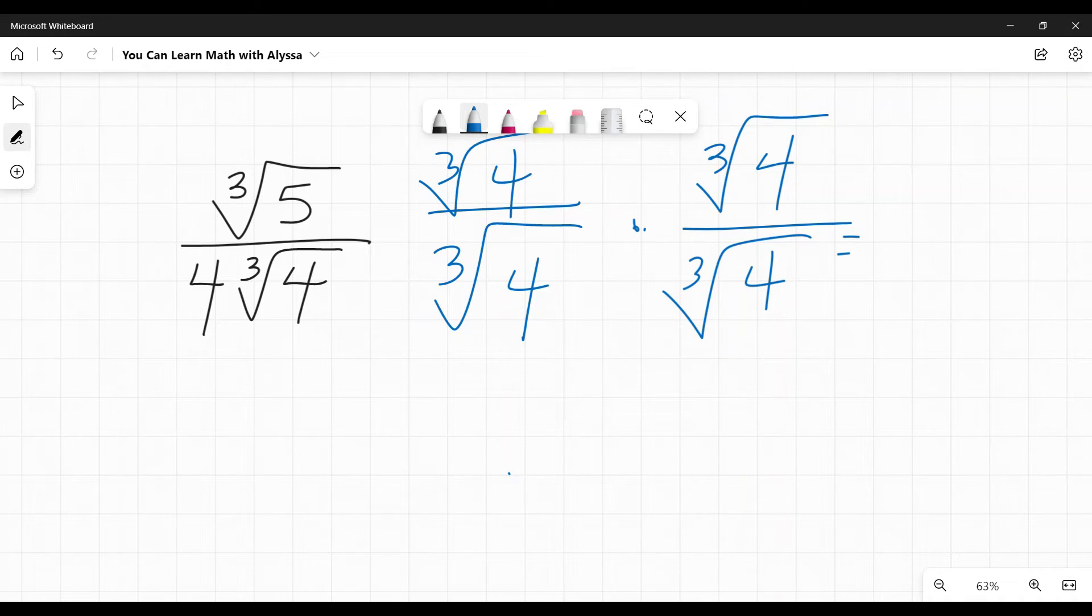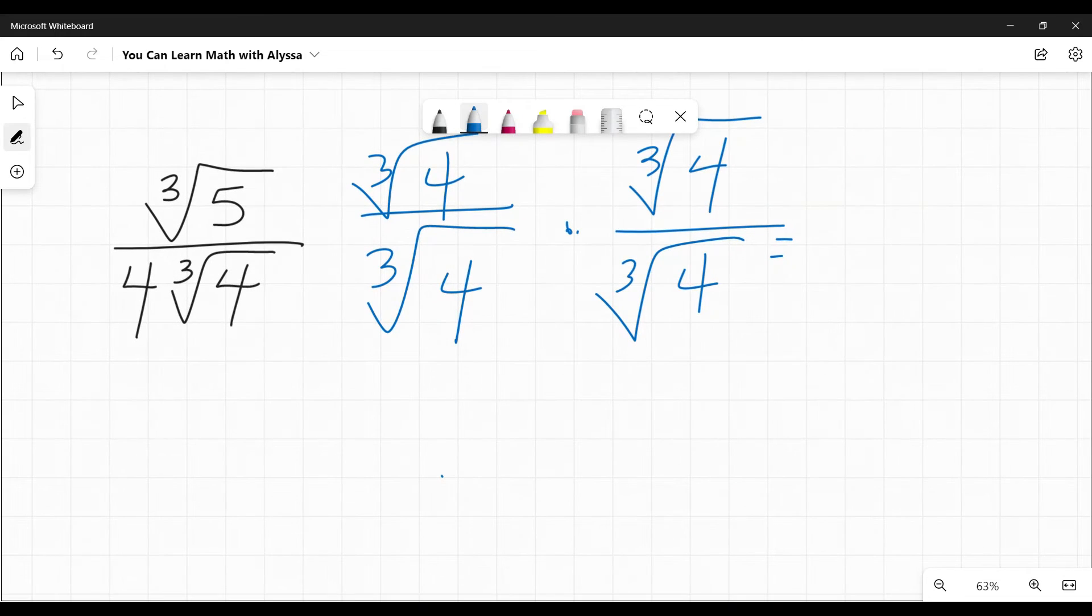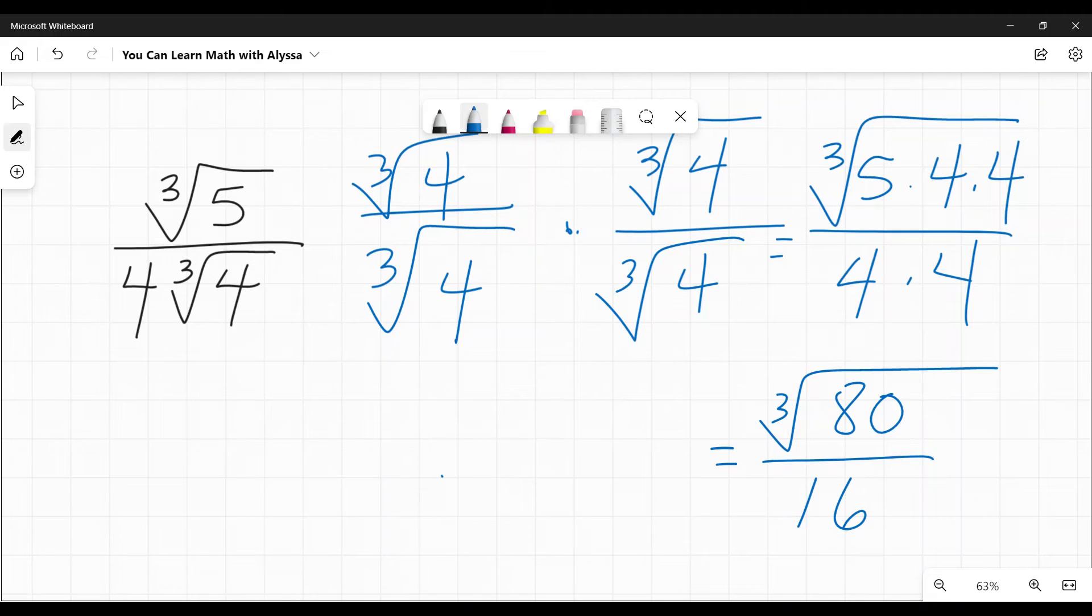So what happens on the bottom? All of those cube roots cancel out. So it just becomes four. You have that original four from here and then I have the four that comes from multiplying these together. So four times four. On top, I have the cube root of, because they're all cube roots, I can combine them. Five times four times four. So the cube root on top, five times four is 20, 20 times four is 80. And on the bottom, I have four times four or 16.